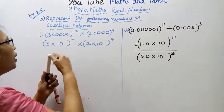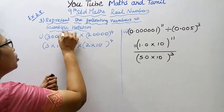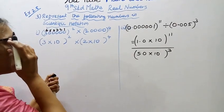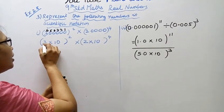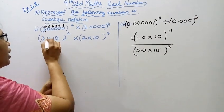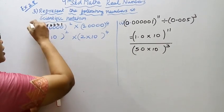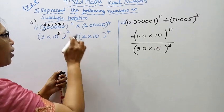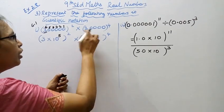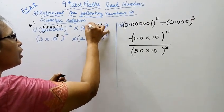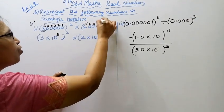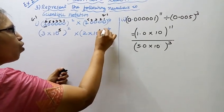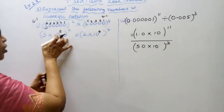Okay, let's look at the first number. Counting digits: one, two, three, four, five, six — so it is 3 into 10 to the power of 6, minus one gives 10 to the power of 5. The whole square. Then the second number: one, two, three, four, five — above five, minus one gives four — so it is 2 into 10 to the power of 4, the whole power 4.